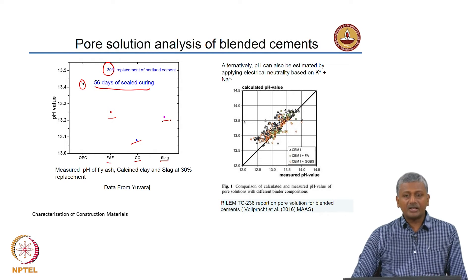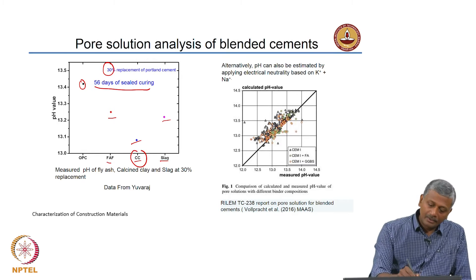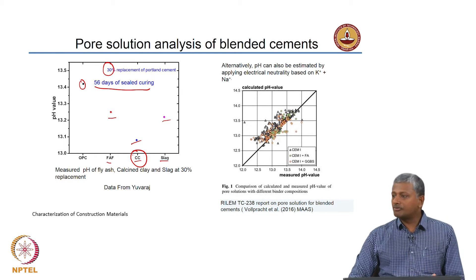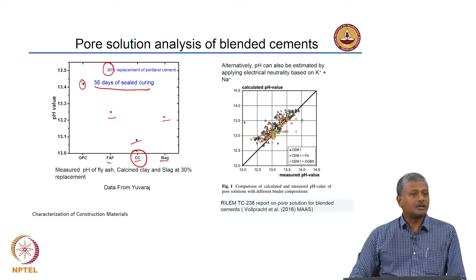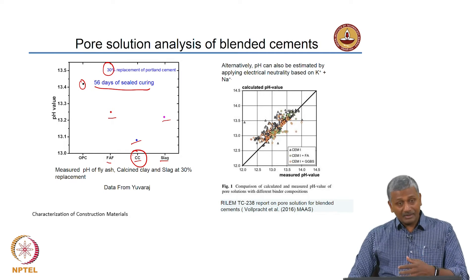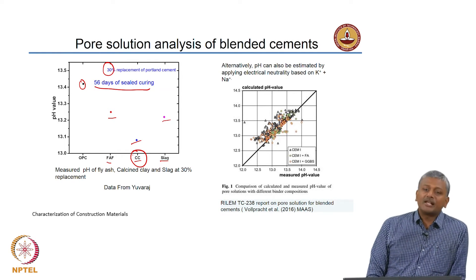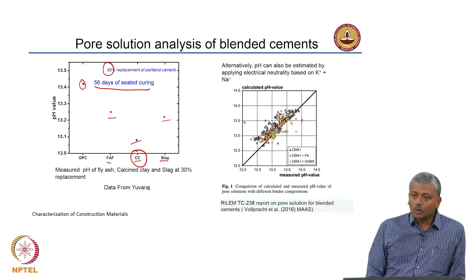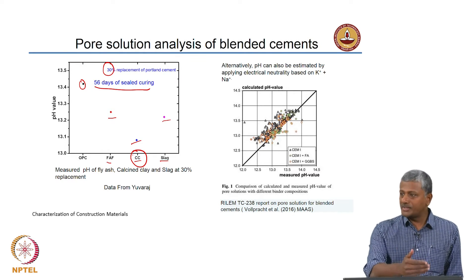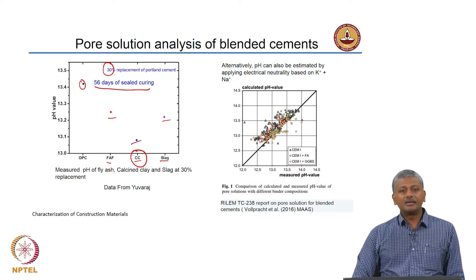The lowered pH of cementitious systems that employ highly reactive blending systems like calcined clay is not sufficiently low enough to cause corrosion of the reinforcing steel. A common concern is that people do not want to use blending materials like silica fume or calcined clay because they feel these tend to completely consume the calcium hydroxide or Portlandite in the system, leading to a pH drop. But experimental results here and in several other published studies clearly show that the pH drop, although significant compared to OPC, is not significant enough to really lead to any level of corrosion of the reinforcing steel.